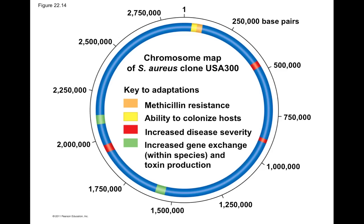Here is a map of the chromosome of a particular clone — a genetically identical individual — of Staphylococcus aureus. We can see it has a gene for methicillin resistance, a gene that increases pathogenicity or disease severity, and also a gene that enables it to pass the methicillin resistance genes on to other bacteria.